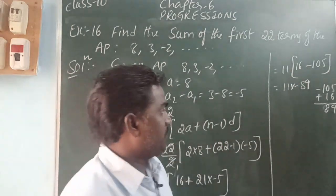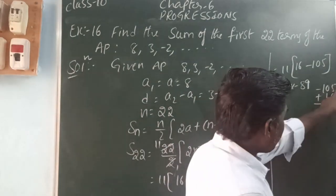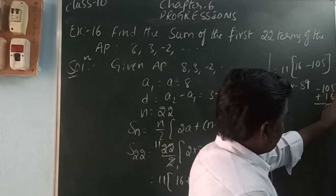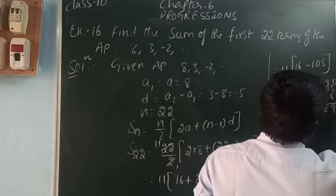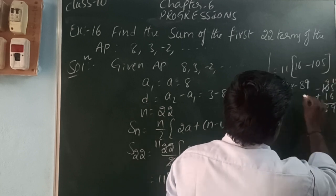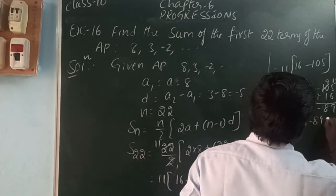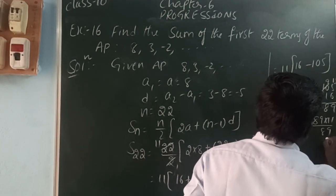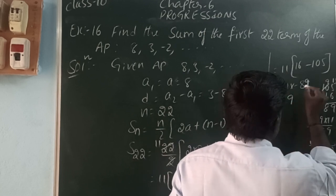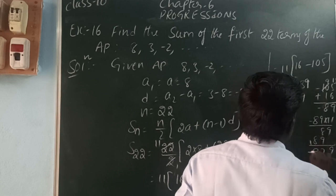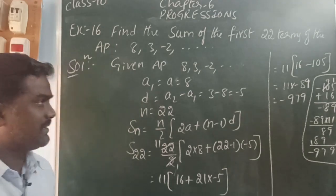16 - 105 = -89. So S22 = 11 × (-89) = -979. The sum of the first 22 terms is -979.